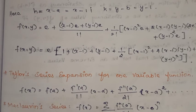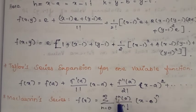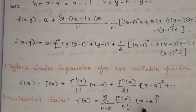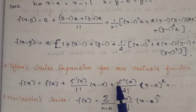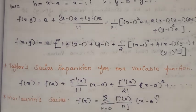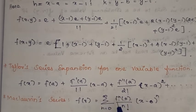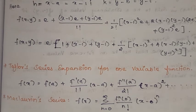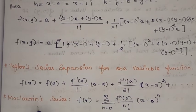Maclaurin's series is a very important special case. The Maclaurin's series is: f(x) = summation of n = 0 to infinity of f^n(0)/n! · (x minus 0)^n. So in the Taylor series for one variable, if we put a = 0, then that gives us Maclaurin's series.